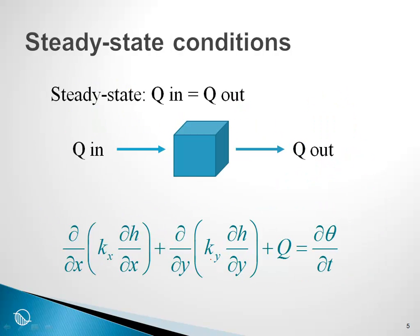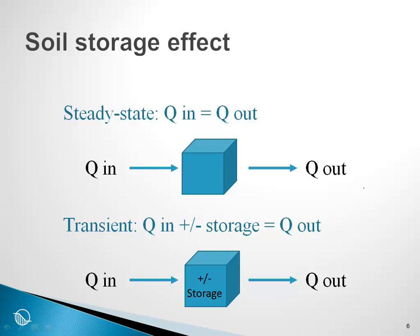Recall that under steady state conditions, Q_in is equal to Q_out — there is no storage, and the term on the right-hand side goes to zero. If we now have storage, then we have a transient process. In equation form: Q_in plus or minus the water stored or released in the soil equals Q_out. So Q_in is no longer necessarily equal to Q_out; the soil has either stored or released some water, and that is what makes the process transient.